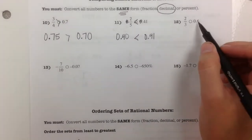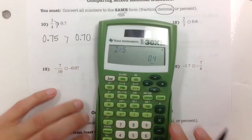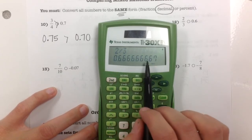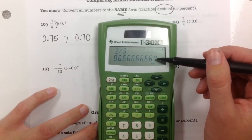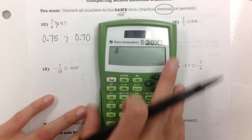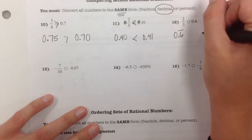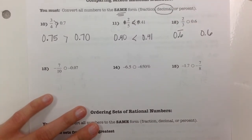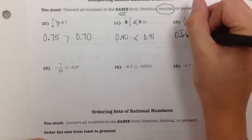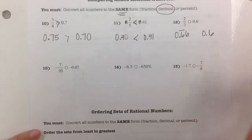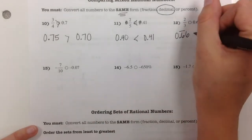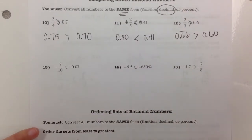2 thirds compared to 6 tenths. I convert: 2 divided by 3 gives 0.6666... repeating — the 7 at the end on a calculator is just rounding. So this is really 0.6 repeating. Compared to 6 tenths, they might look the same, but 0.6 repeating is 0.66... while 6 tenths is 0.60. So 66 is greater than 60, meaning 2 thirds is greater than 6 tenths.